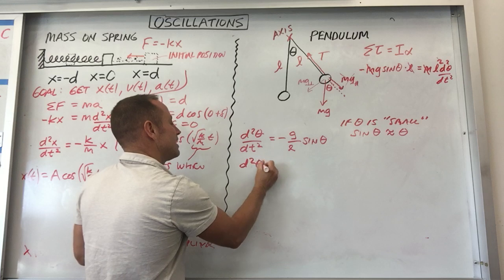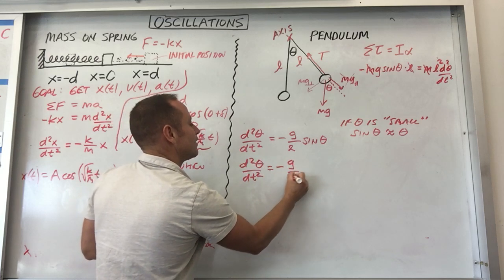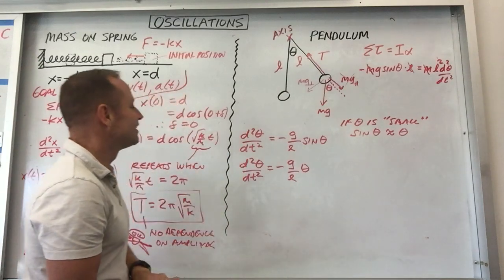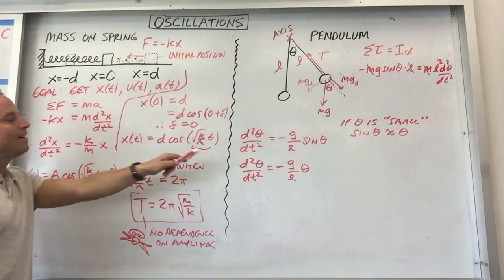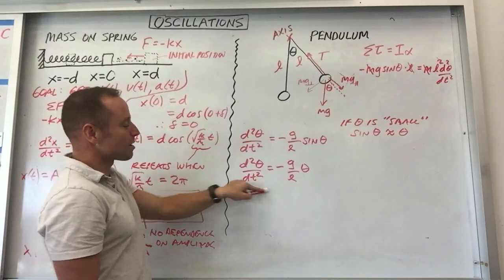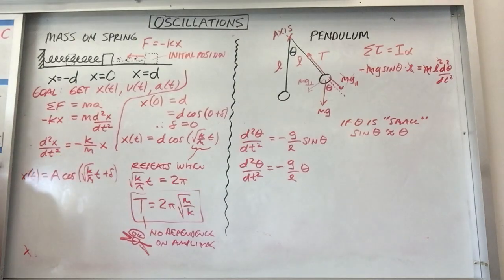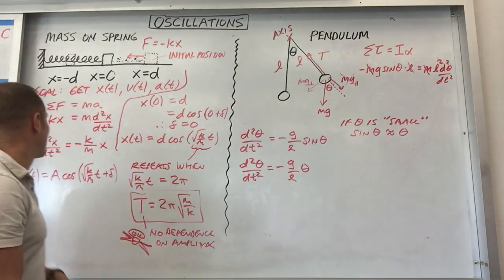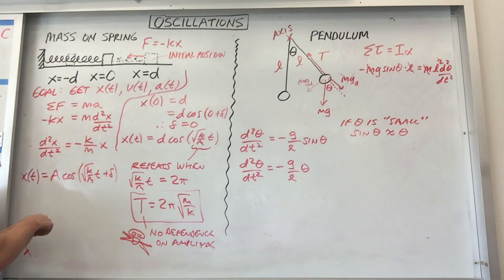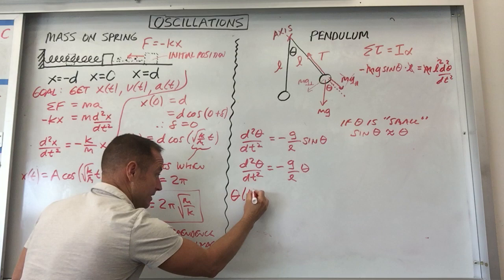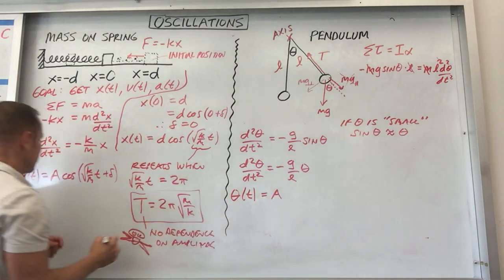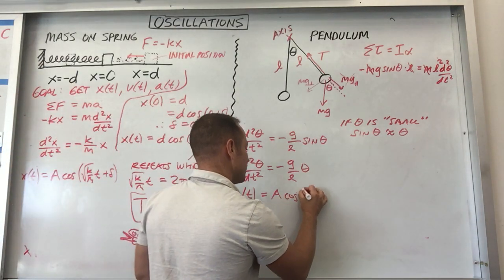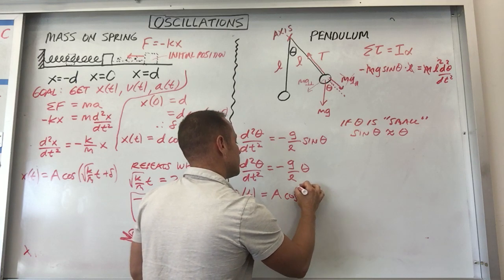And you get d squared theta by dt squared equals minus g over L theta. If you just roll with me on that, we can come back to this thing later. Let's just see what happens if we go for it with this. Well, if this is the case, if you can actually stomach this for the time being, we can cheat off of our previous work and then just write down the solutions. This says there's a function out there. If I take its derivative twice, I get it back with a negative constant in front. Well, we already did that with the mass on a spring. So we can kind of cheat off the work we did before and say, well, instead of it being x of t, it's theta of t is going to be some kind of an amplitude times cosine. Well, instead of root k over m, now it's going to be root g over L times t plus a phase.